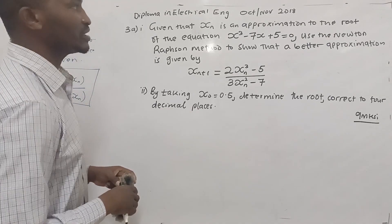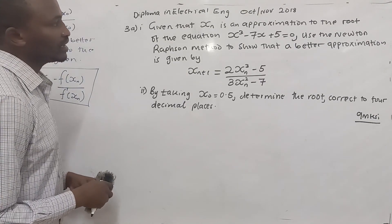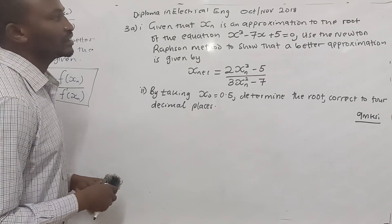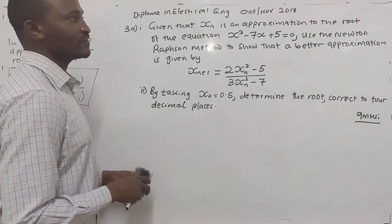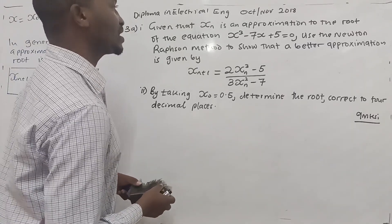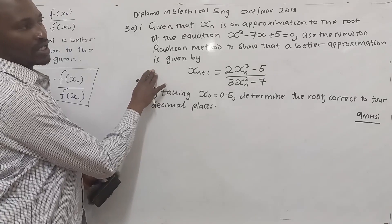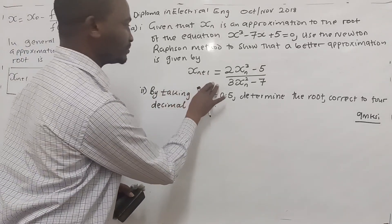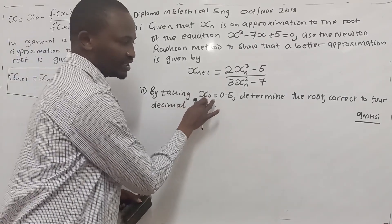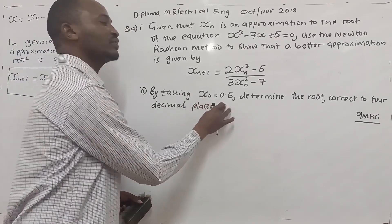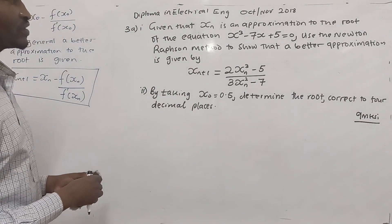Now our question here is from Diploma in Electrical Engineering, 2018, October-November. Part one: given that xn is an approximation to the root of the equation x cubed minus 7x plus 5 equals 0, use the Newton-Raphson method to show that a better approximation of the root is given by the formula. Then, by taking x0, the initial approximation, to be equal to 0.5, we determine the root correct to 4 decimal places. So let us go about solving this.